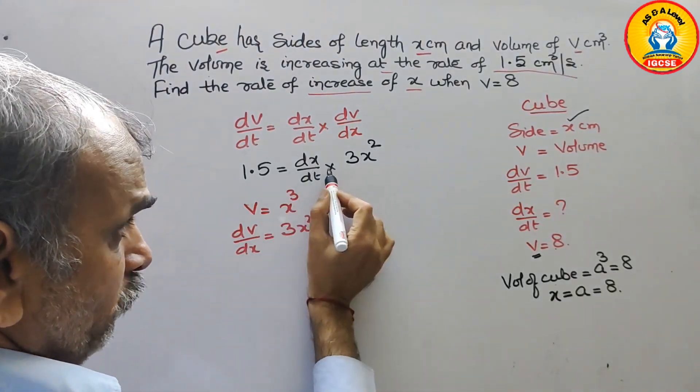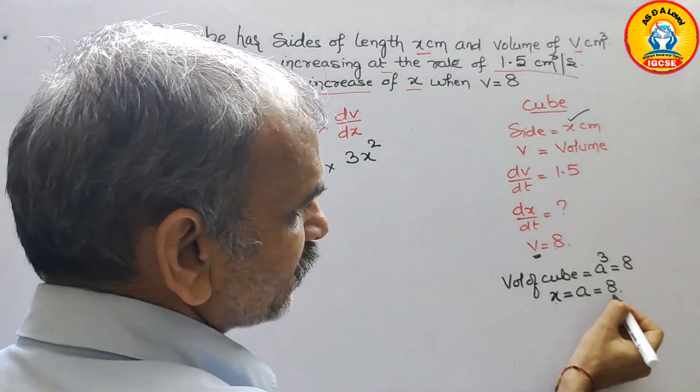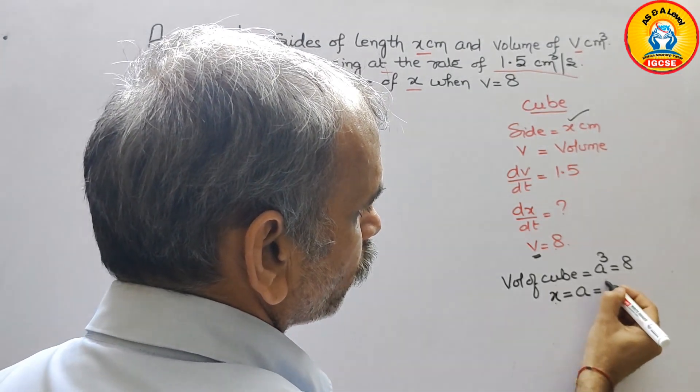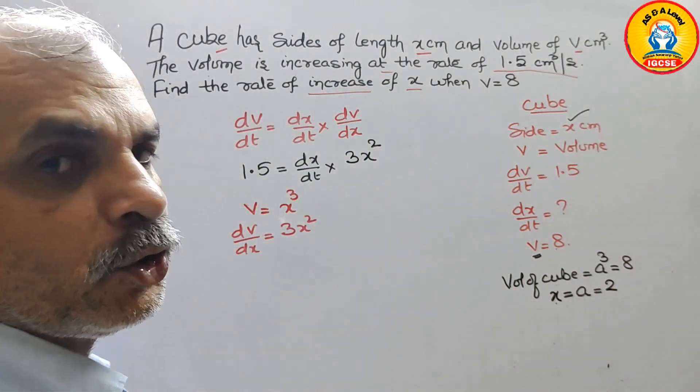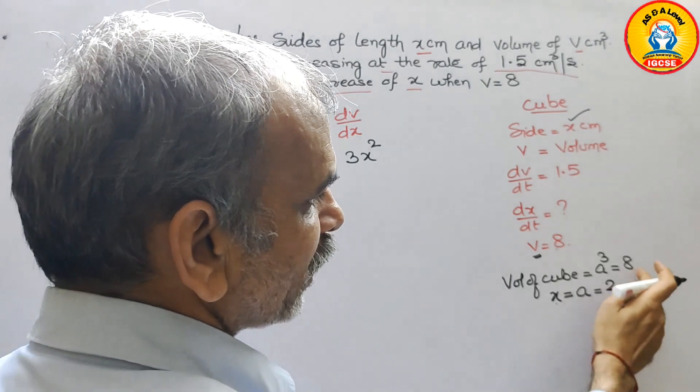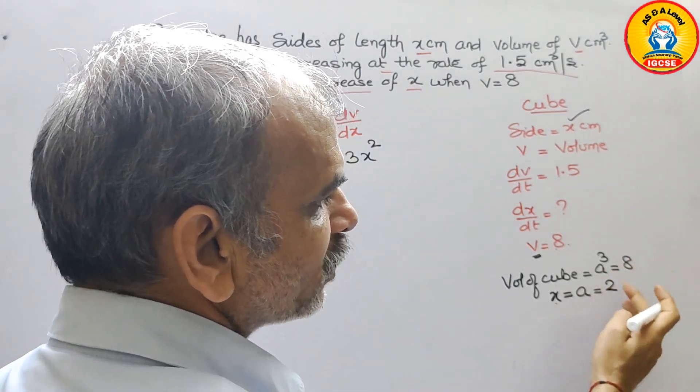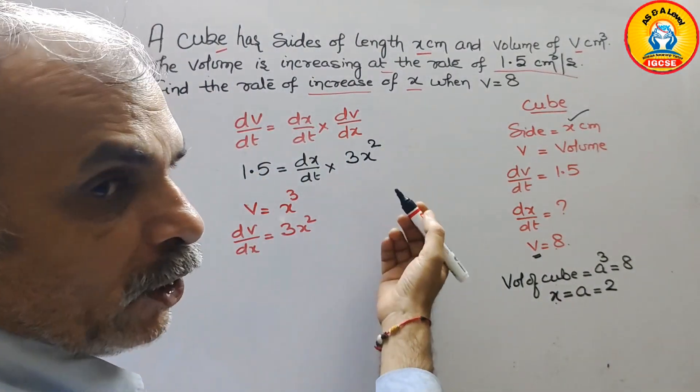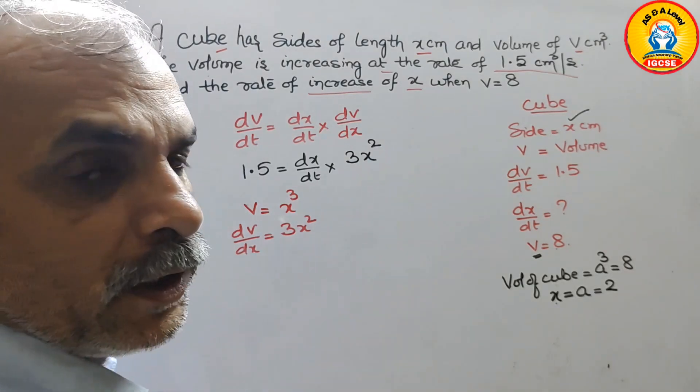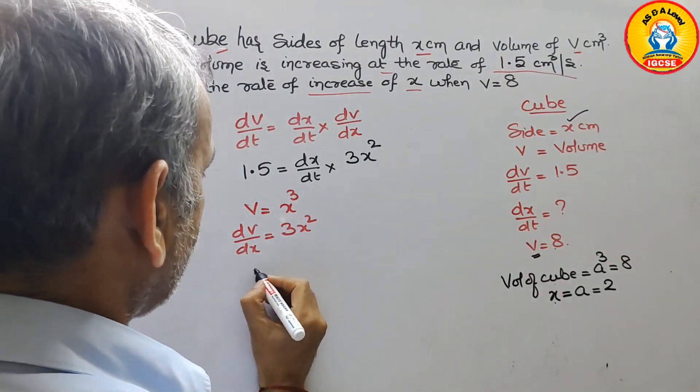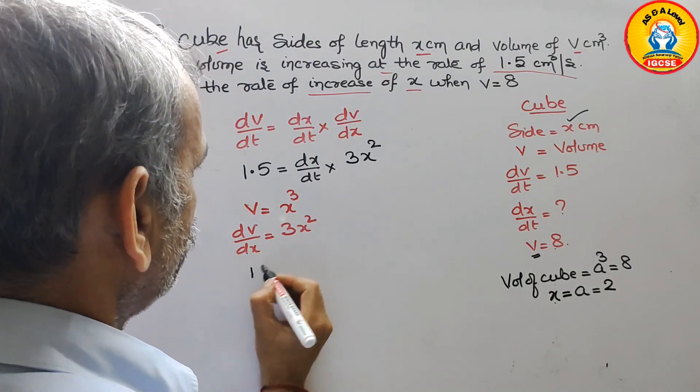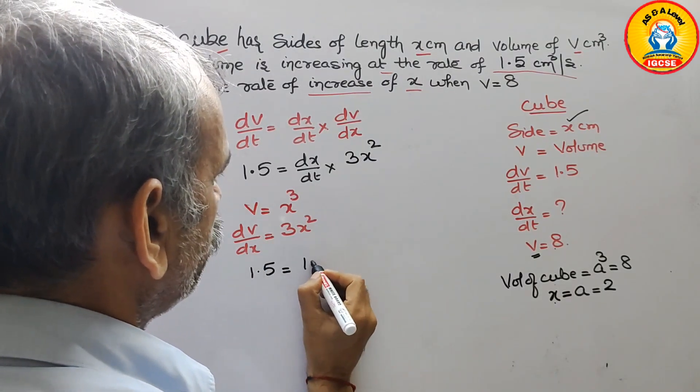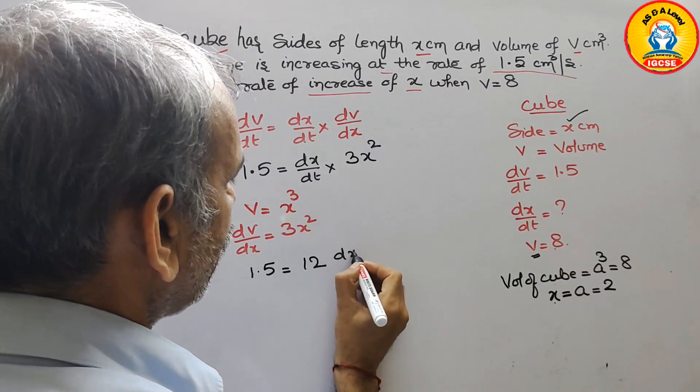So here x is, we know that x is 2. x is 2. Because here 8 is there, a cube is 8, then a is 2 only. So here just substitute the value: 3 times 4 is 12. So here comes 12. So that means it will be 1.5 is equal to 12 dx by dt.